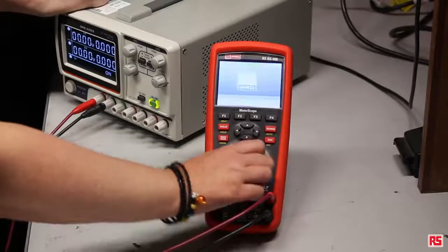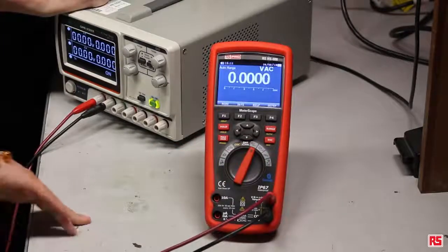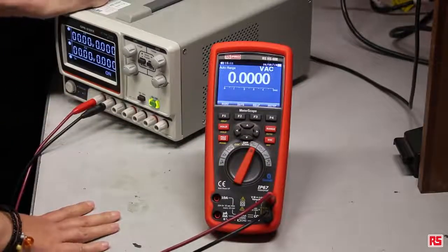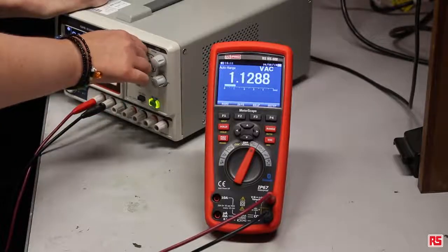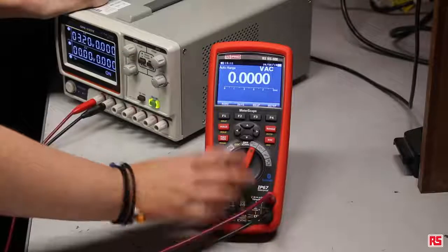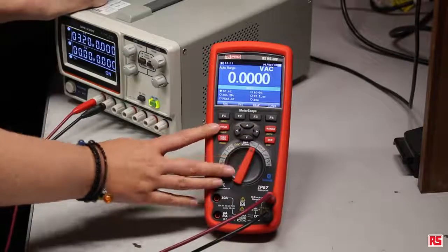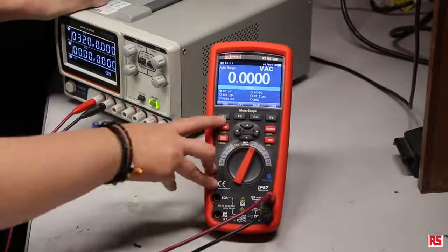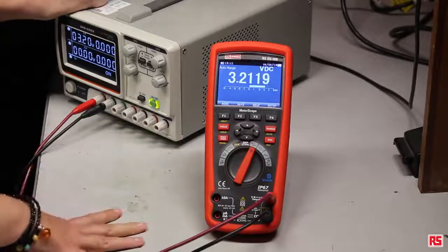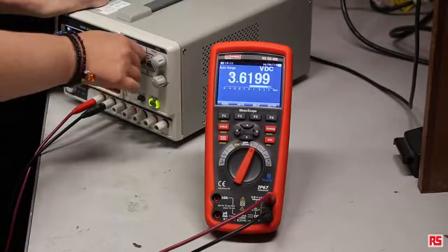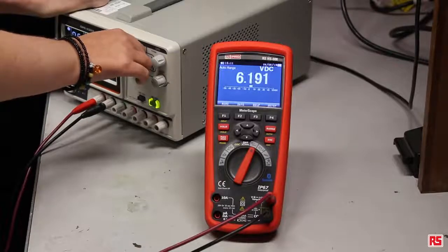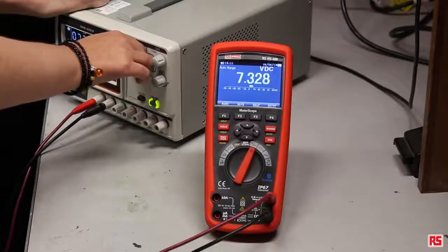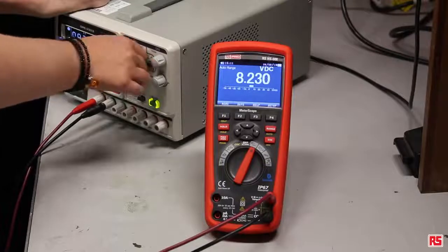So if we turn it on, see a nice RS Pro logo, it takes you straight into your auto range. So your soft key will tell you which range you've got. Now it's swapped over to DC and you can see it auto ranging for you with very quick responsive time.